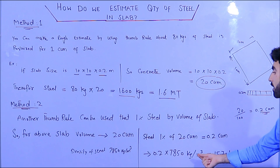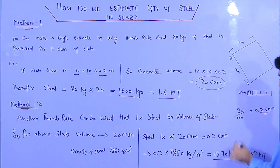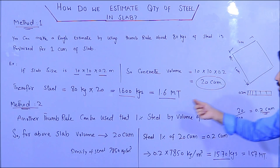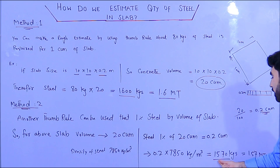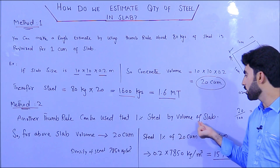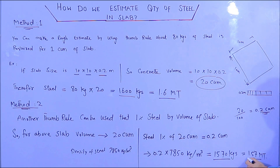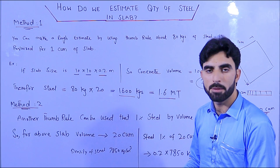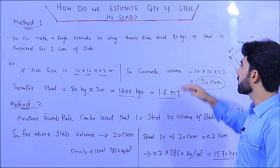Using the density of steel, we require approximately 1570 kg of steel for this slab. So here we have 1600 kg from Method 1 and 1570 kg from Method 2 using one percent of steel by volume of slab. That is 1.57 metric tons of steel required to construct a 10 × 10 × 0.2 meter RCC slab.